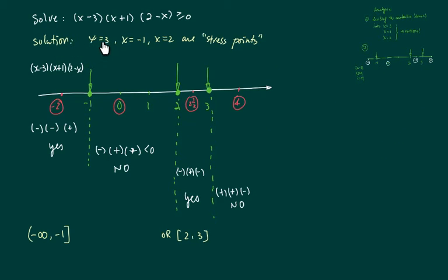Alright, so here's the solution. I'm setting each one of them equal to 0, and that gives me 3, minus 1, and 2 as the stress points. I'm going to put a number line where the stress points are. Now notice, this one is not a hollow point because of the equal sign, so they're actually inclusive of those points, the stress points. Now the number line is divided into four chunks. The red ones are the sample points. So I'm going to evaluate the sample points into three of those terms, determine the sign of each one of the terms. For example...